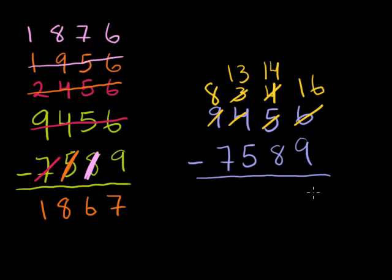So you get 16 minus 9 is 7. 14 minus 8 is 6. 13 minus 5 is 8. 8 minus 7 is 1. And lucky for us, we got the right answer.